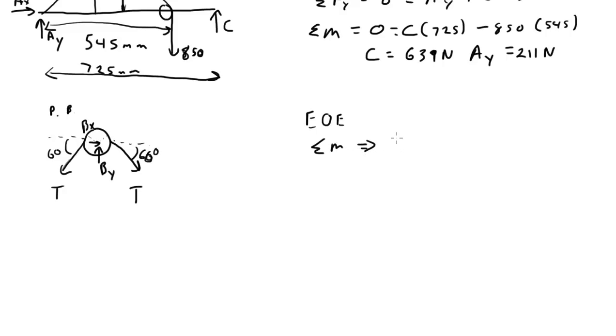Nonetheless, the sum of the moments basically just gives us that T equals T, which makes perfect sense. It's the sum of the forces in the X direction that's helpful and the sum of the forces in the Y direction that is helpful. So let's do sum of forces in the X direction. That's going to be T times cosine of 66 minus T times cosine of 60 plus BX equals 0. Sum of forces in the Y is minus T sine of 66 minus T sine of 60 plus BY equals 0.